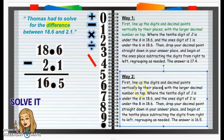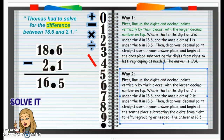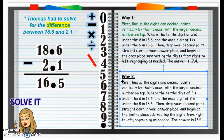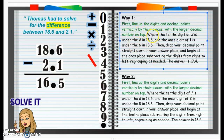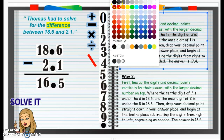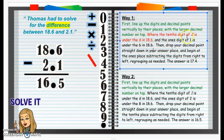Way 2 also says: first, line up the digits and decimal points vertically by their places with the larger decimal number on top. Yes, indeed, that is also correct. So I'm going to put that in green as well. Now let's look back at Way 1. It says the tenths digit of 2 is under the 6 in 18 and 6 tenths. Well, this 2 is in the 1's place, not the tenths place. So that's not quite right — I'm going to put that in red because that 2 isn't even in the tenths place, and that 2 isn't even under a 6.